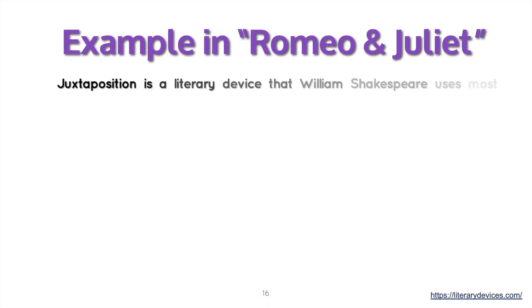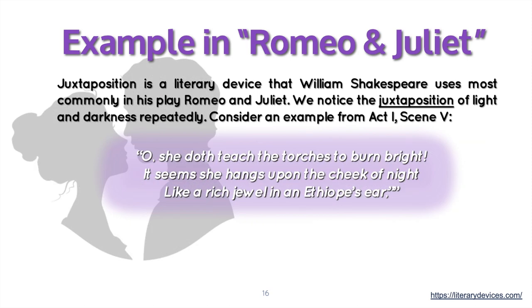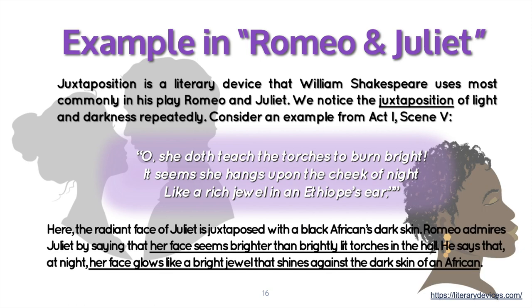Let's look at an example in Romeo and Juliet. Juxtaposition is a literary device that Shakespeare uses most commonly in this play. We notice the juxtaposition of light and darkness repeatedly. Consider Act 1, Scene 5: 'Oh, she does teach the torches to burn bright. It seems she hangs upon the cheek of night, like a rich jewel in an Ethiope's ear.' Here, the radiant face of Juliet is juxtaposed with dark skin. Romeo admires Juliet by saying her face seems brighter than brightly lit torches in the hall, and that at night her face glows like a bright jewel shining against dark skin.